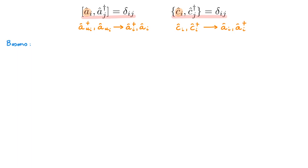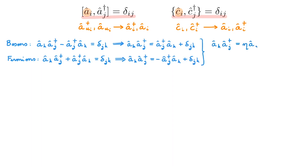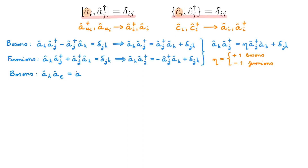For bosons, the commutation relation gives a_k a_j^† minus a_j^† a_k equals delta_{jk}, which implies a_k a_j^† equals a_j^† a_k plus delta_{jk}. For fermions, the anticommutation relation gives a_k a_j^† equals minus a_j^† a_k plus delta_{jk}. We combine both into a single expression using the eta factor, which is plus one for bosons and minus one for fermions: a_k a_j^† = eta a_j^† a_k + delta_{jk}. Similarly, for two annihilation operators: a_k a_l = eta a_l a_k.